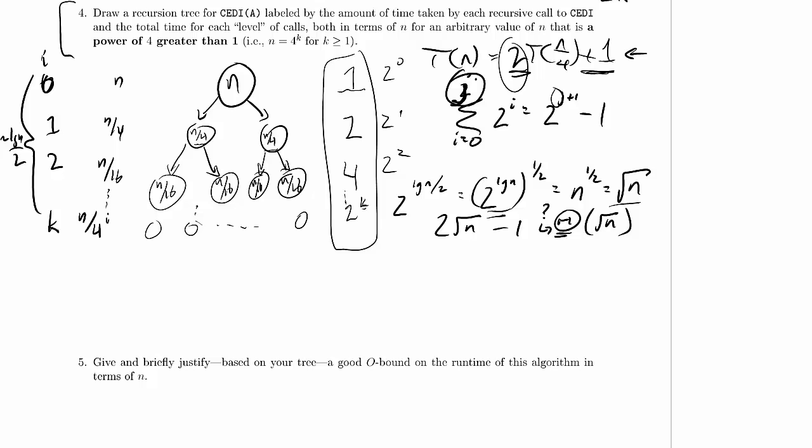Now, why is it asking for a good big O bound instead of a good theta bound? And this comes back to the problems we did earlier. In fact, for an infinite number of problem sizes, this algorithm takes constant time to run, because any time the length of the array is not divisible by 4, the algorithm takes constant time to run.